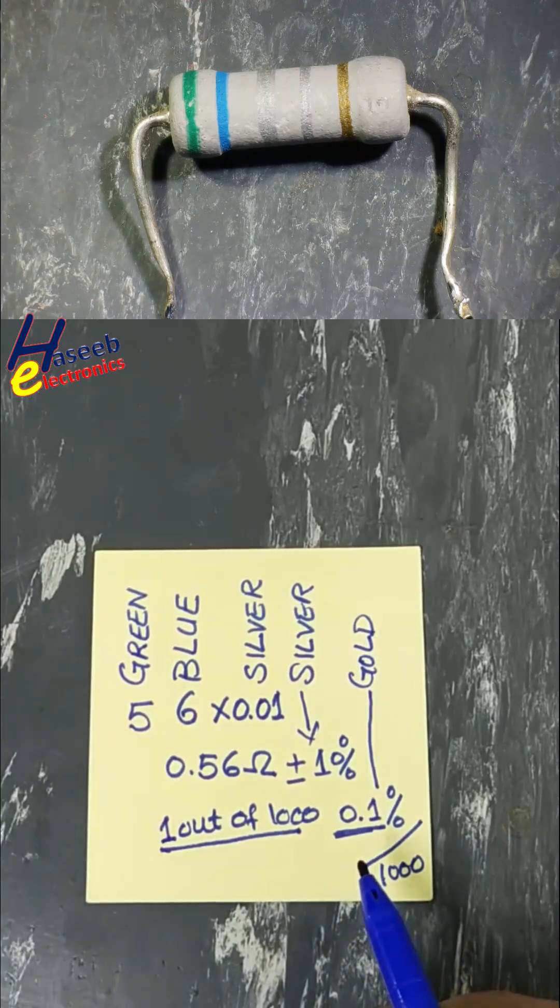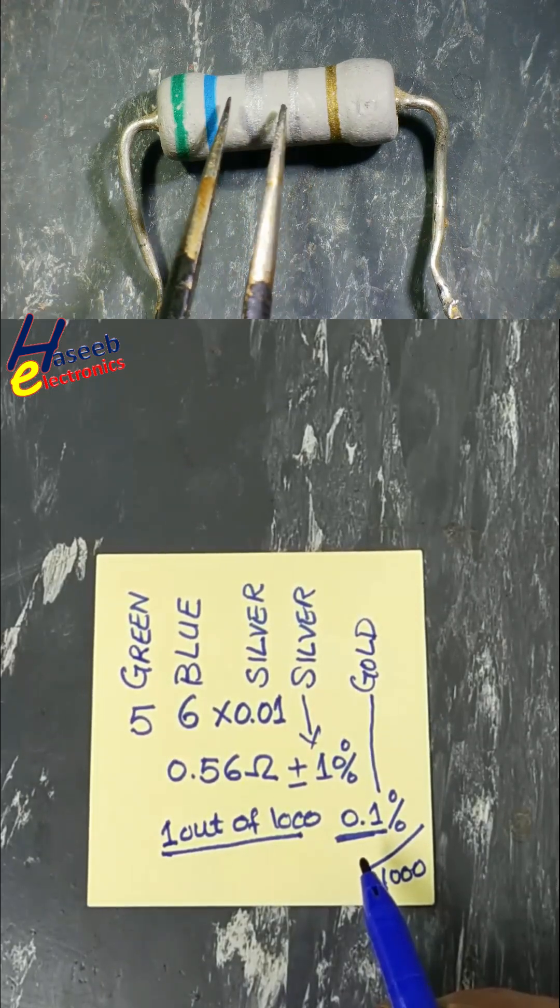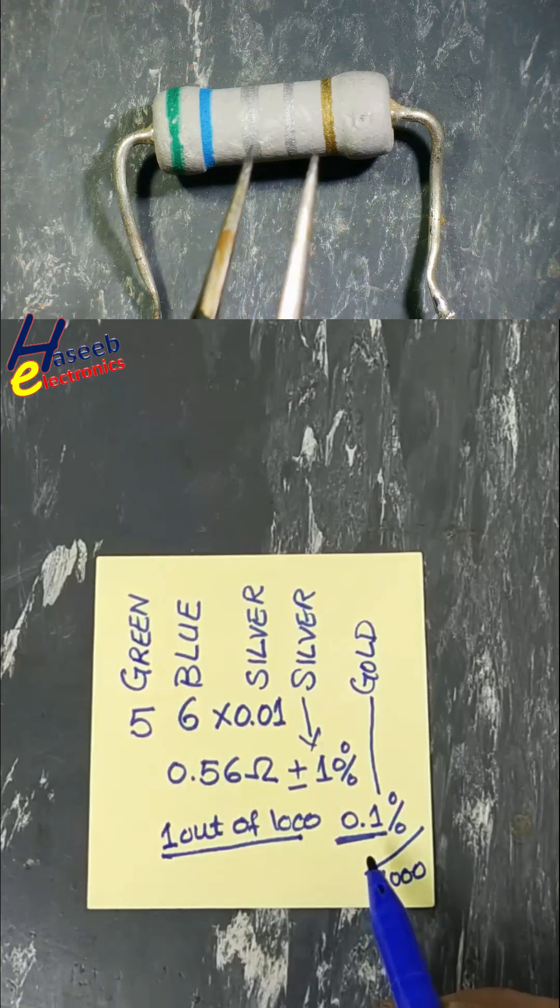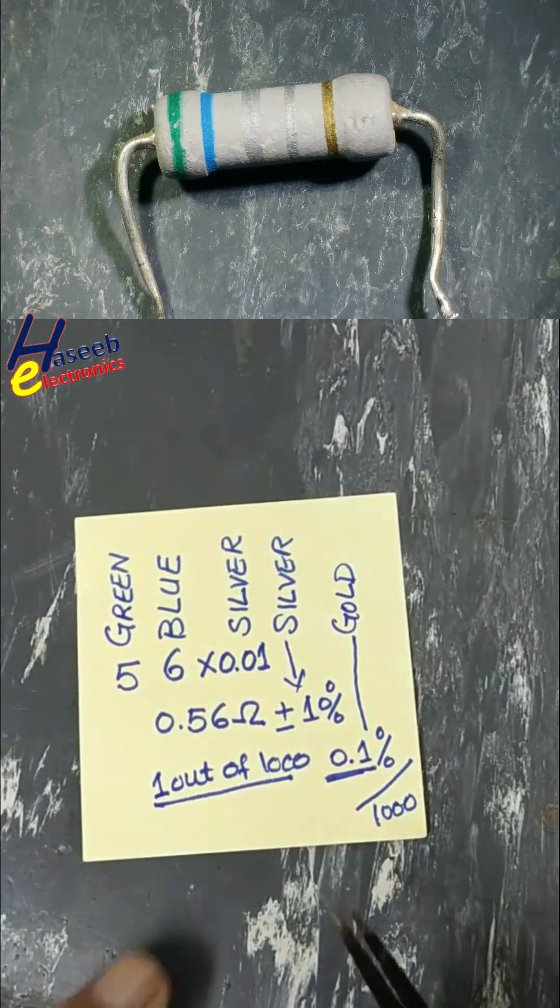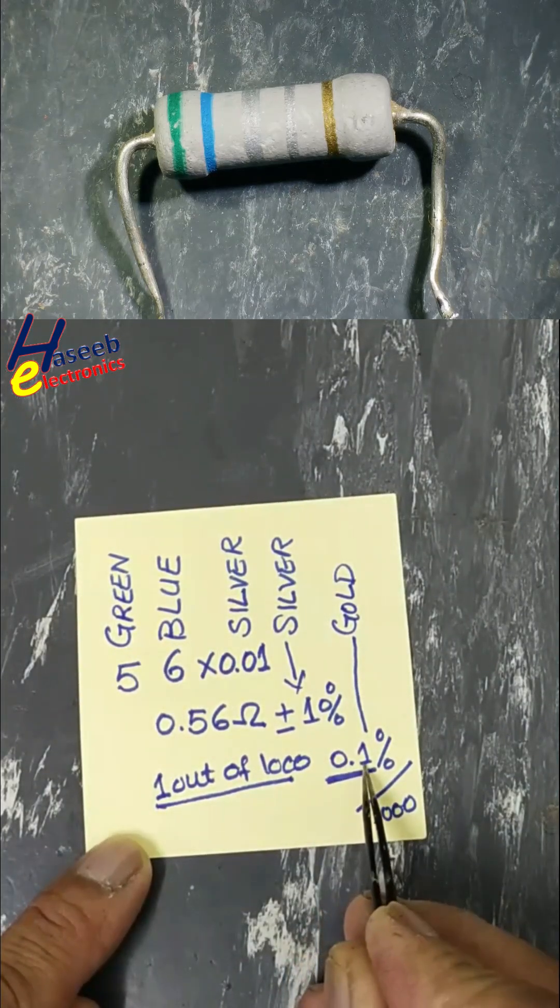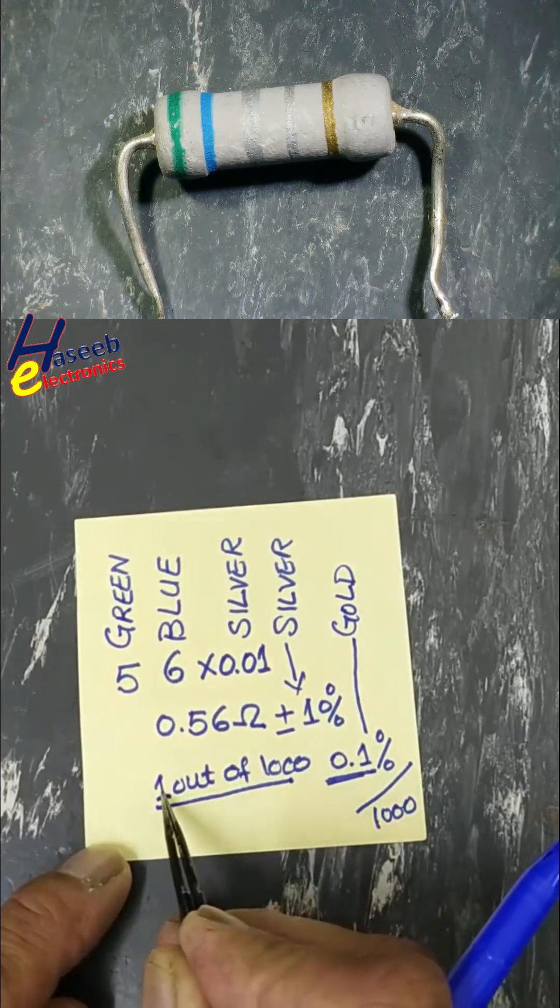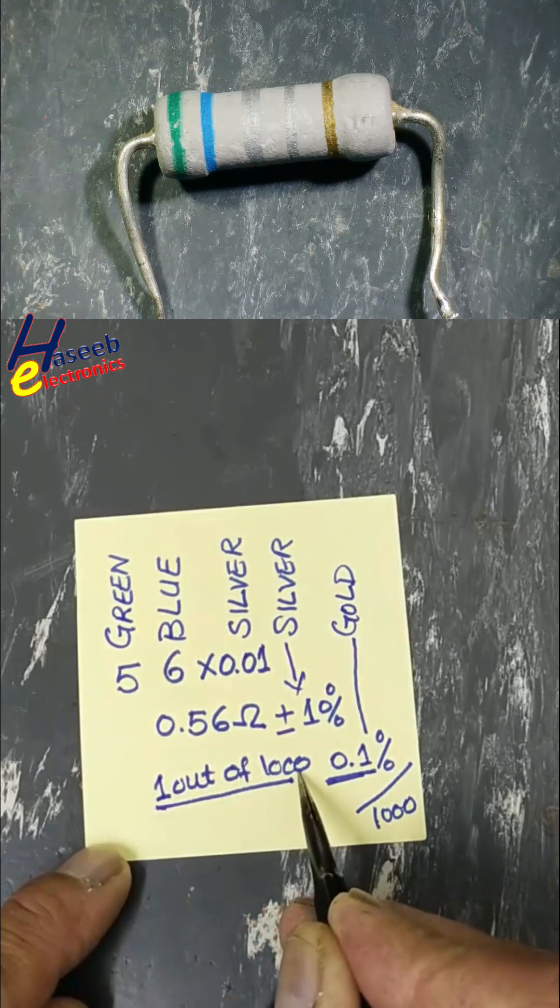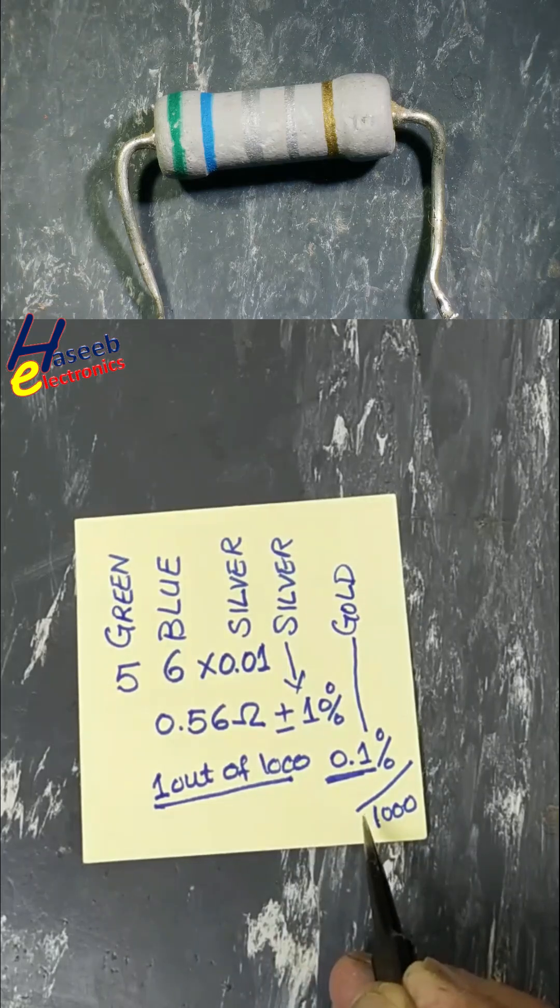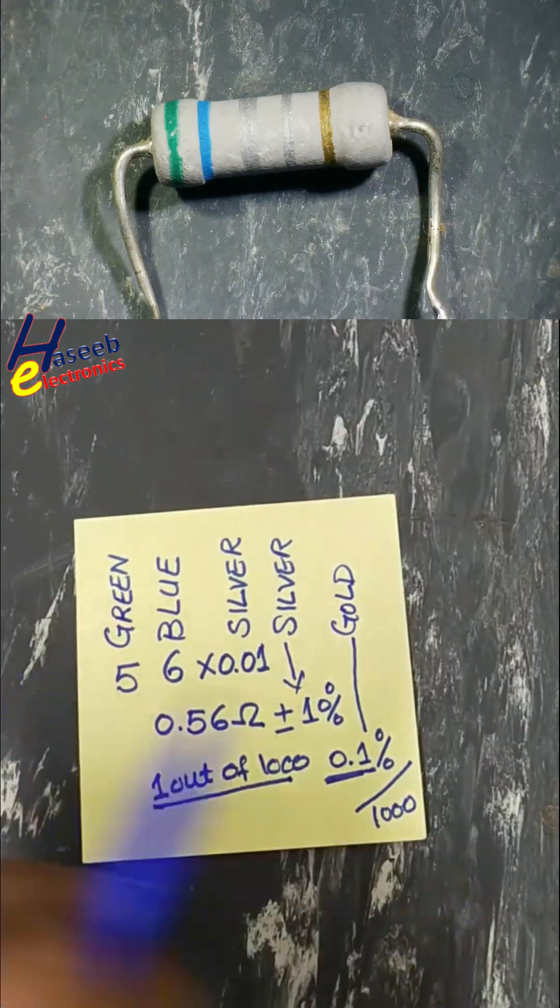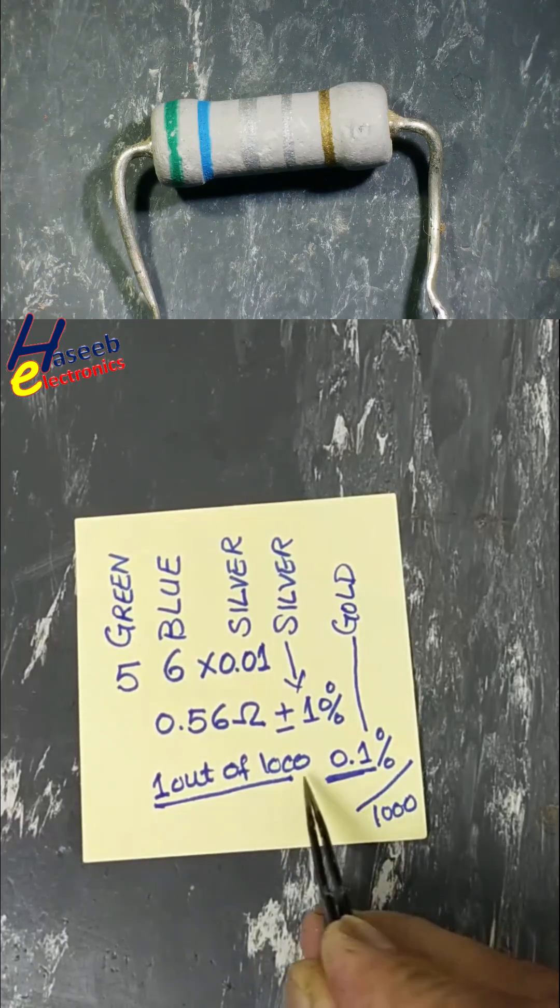At full power rating operation, if it is 3 watt, 1000 resistors will work for 1000 hours at full rate 3 watt, then one resistor out of 1000 may fail. In simple words, when we say one percent, that means one resistor out of hundred. Point one percent means one resistor out of 1000 resistors if we operate 1000 resistors at full power rating.